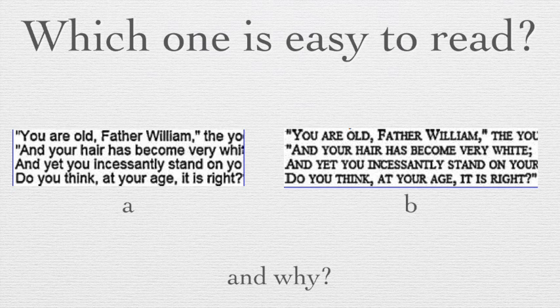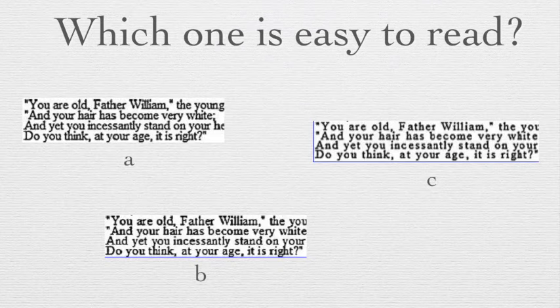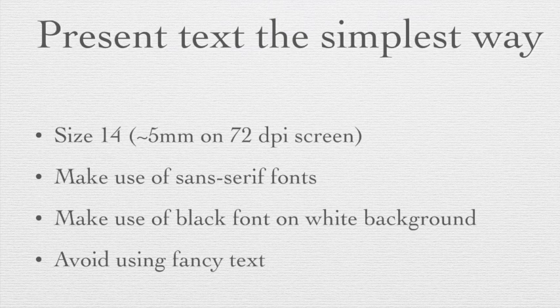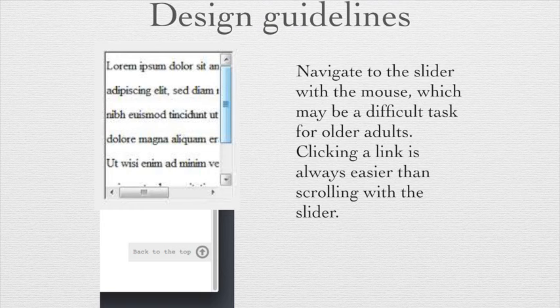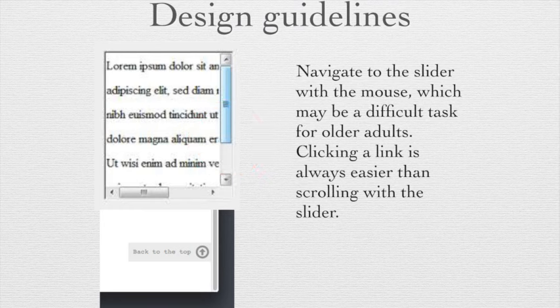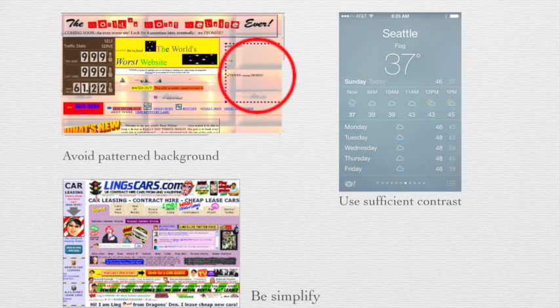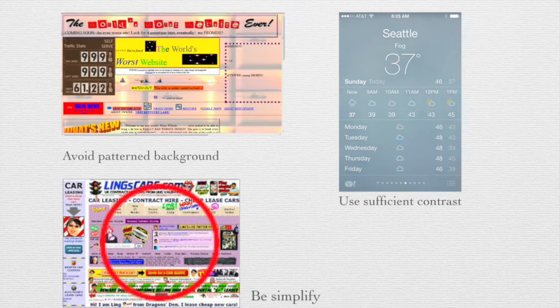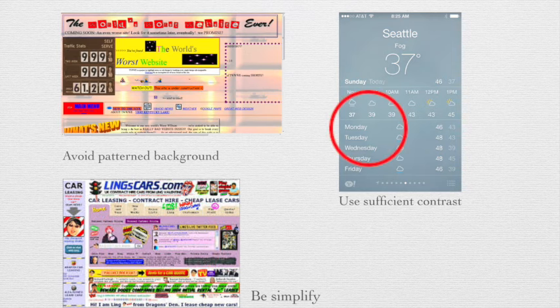For design guidelines, you can use a serif font at size 14, make use of dark font on a white background, and avoid using fancy text. Scrolling is a problem for older adults because they cannot click accurately, so you can use links instead of a scrollbar at the end of a webpage. When designing a webpage, avoid patterned backgrounds because they create more clutter. Keep it simple with less information. Contrast should be sufficient — avoid white text on a white background.